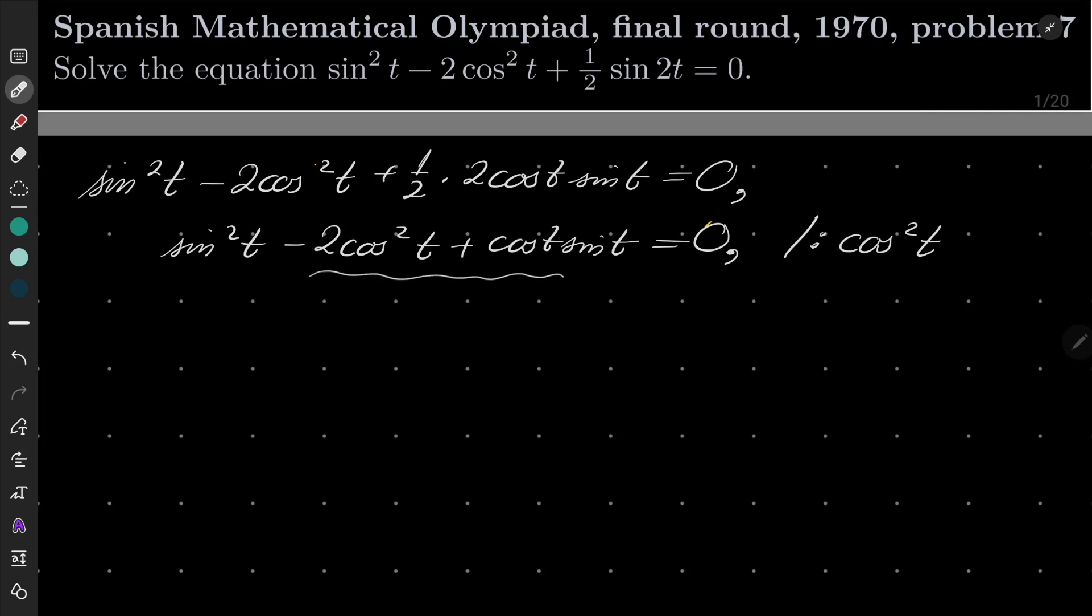then this part would vanish and we'd have sin(t) = 0. But cosine and sine cannot both be 0 at the same time. So by our division we are not losing any solution. It's legal.